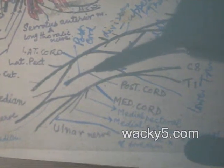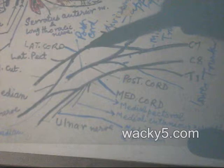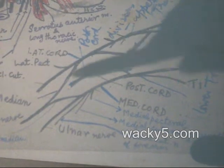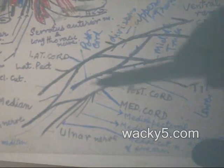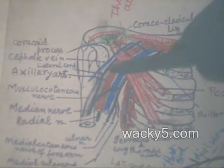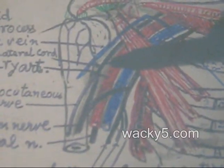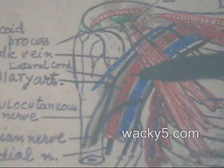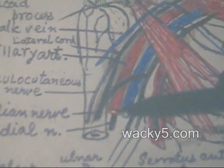Ultimately from the brachial plexus, three nerve cords are formed. One is called the posterior cord, one is called the lateral cord, and the other one is called the medial cord. Here in this diagram you can see the lateral cord, the medial cord, and the posterior cord. These names are given in accordance with their relationship with the axillary artery. The nerve cord found lateral to the axillary artery is the lateral cord, the one medial to it is the medial cord, and the one behind it — not seen directly but seen lower down where the artery has been cut — is the posterior cord.